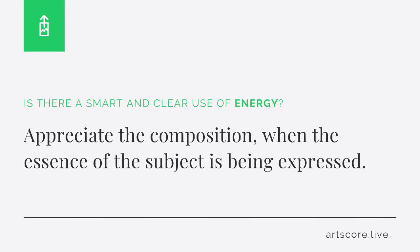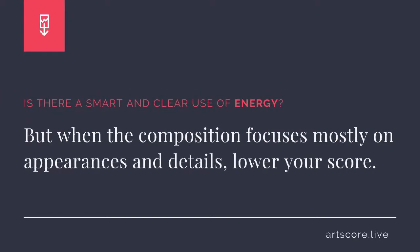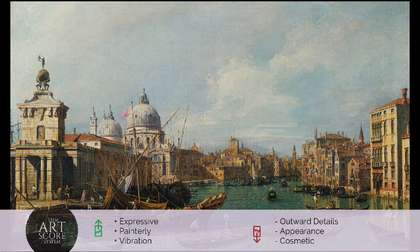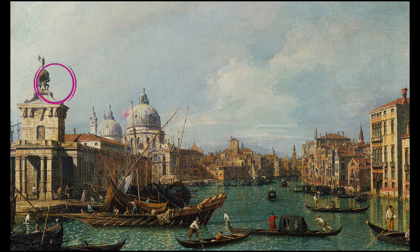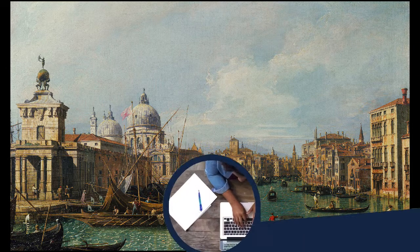Energy. Is there a smart and clear use of energy? Appreciate the composition when the essence of the subject is being visually expressed. But when the composition focuses mostly on outward appearances and details, lower your score. I scored the work a 6. I feel the artist wants to capture more than just the subject's appearance. What's your score?